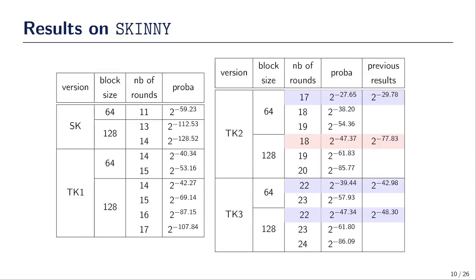Here are the results we obtained against the various versions of SKINNY. As you can see, we obtained a lot of new results — a lot of new Boomerang distinguishers — and in particular, we improved all the previous works. For instance, if you look at this particular line of this table, for 18 rounds of SKINNY-128 in the TK2 setting, the probability of the best Boomerang distinguishers we found is 2 to the minus 47, which is 2 to the 30 times better than the probability of the best previously known Boomerang distinguishers in this setting.